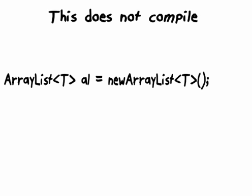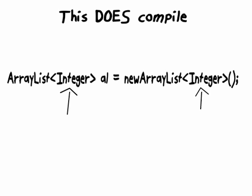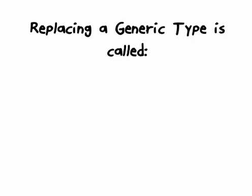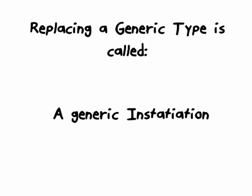So if you wanted to create an ArrayList that stores integers, then you would want to use the capital I integer instead of the T right there. Replacing a generic type is called a generic instantiation.